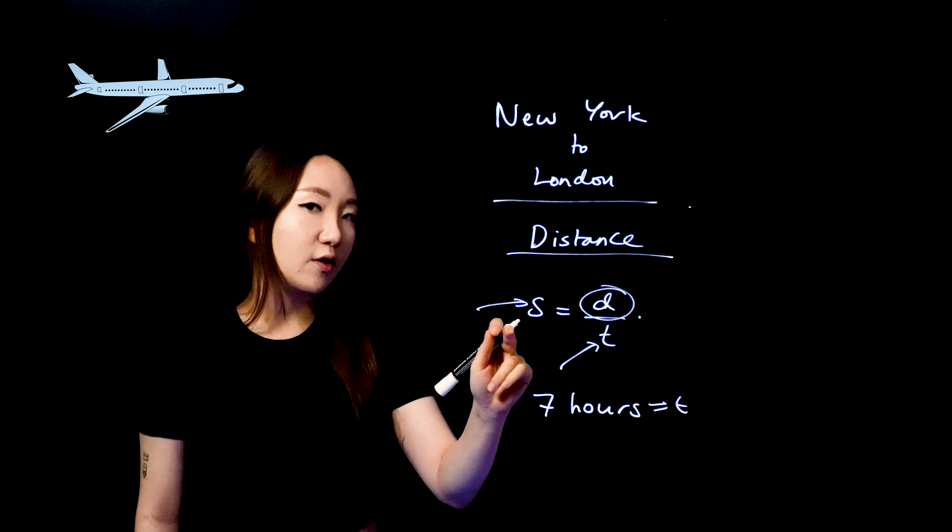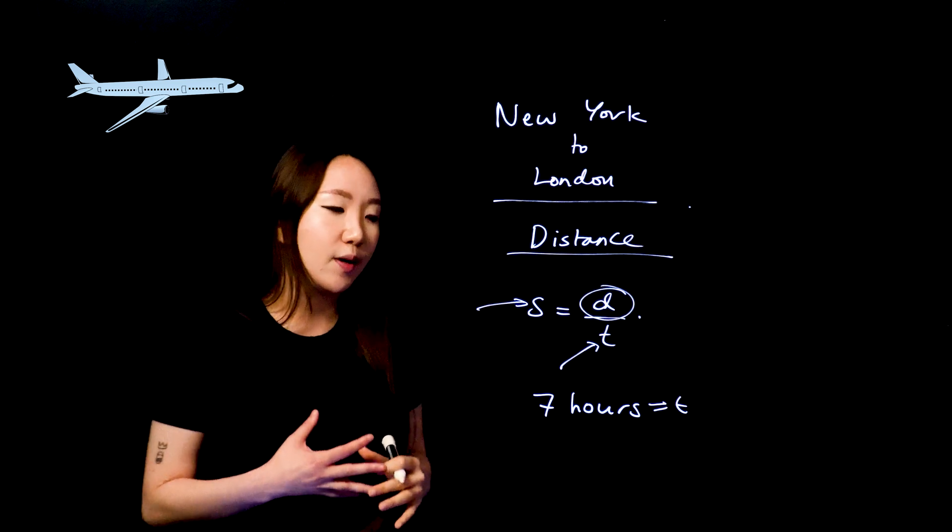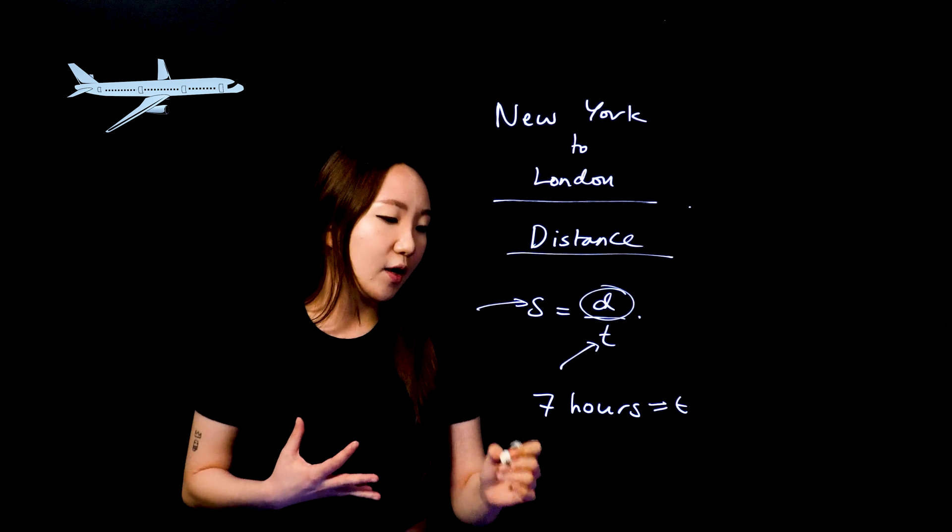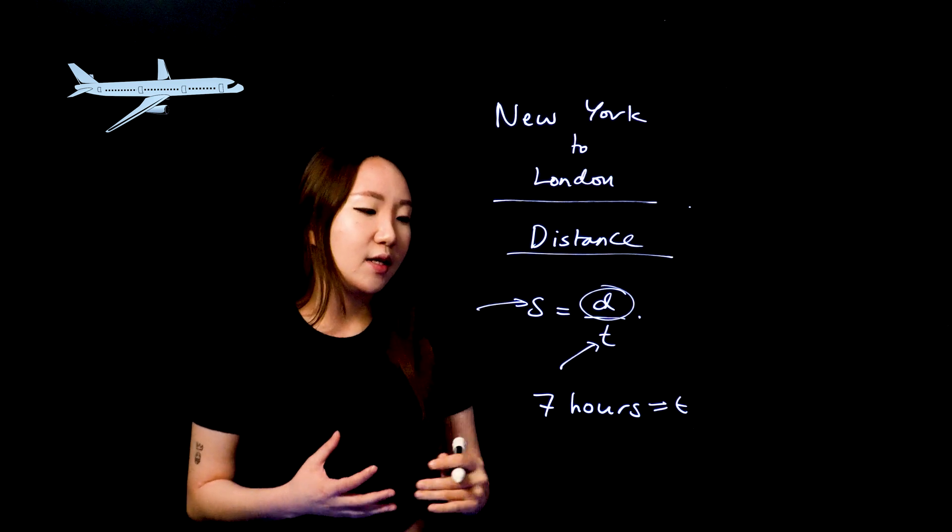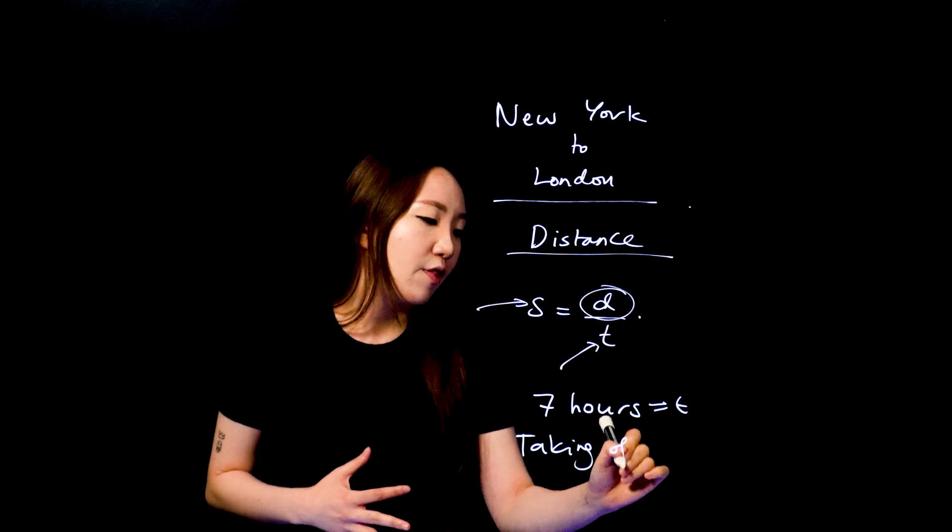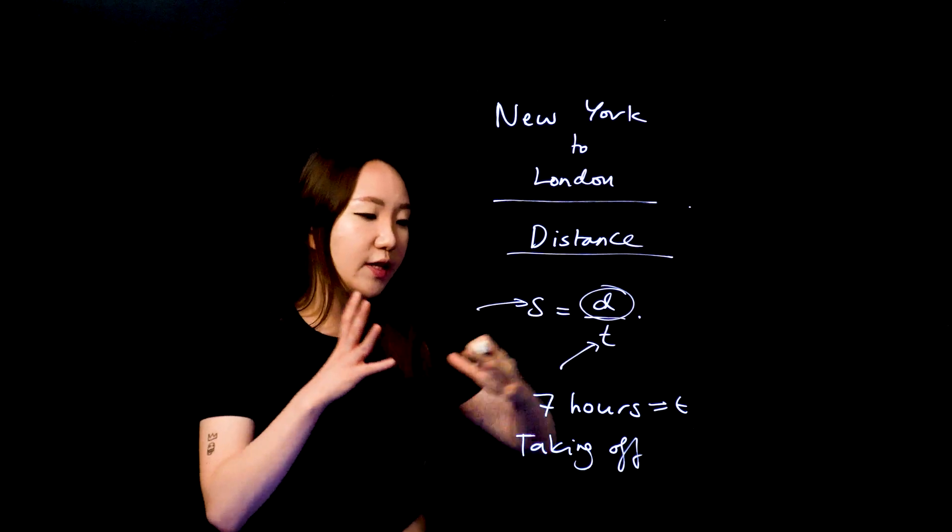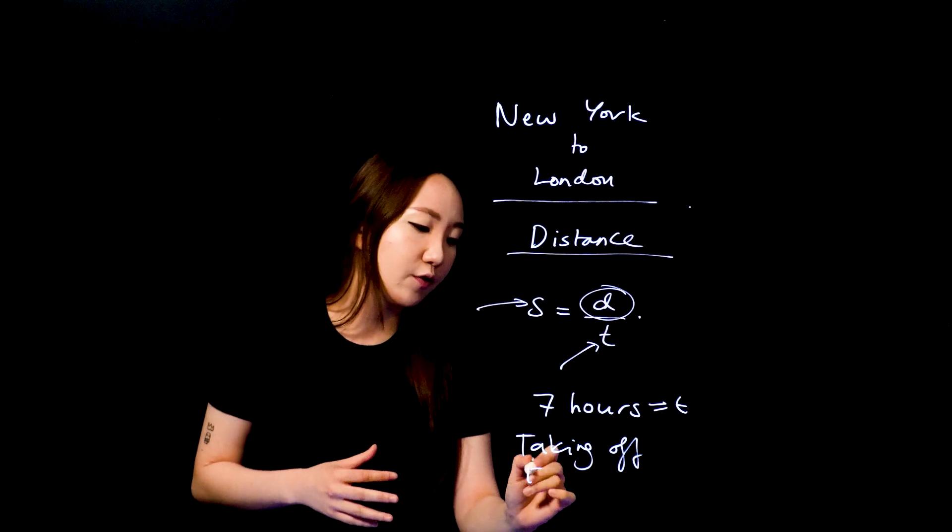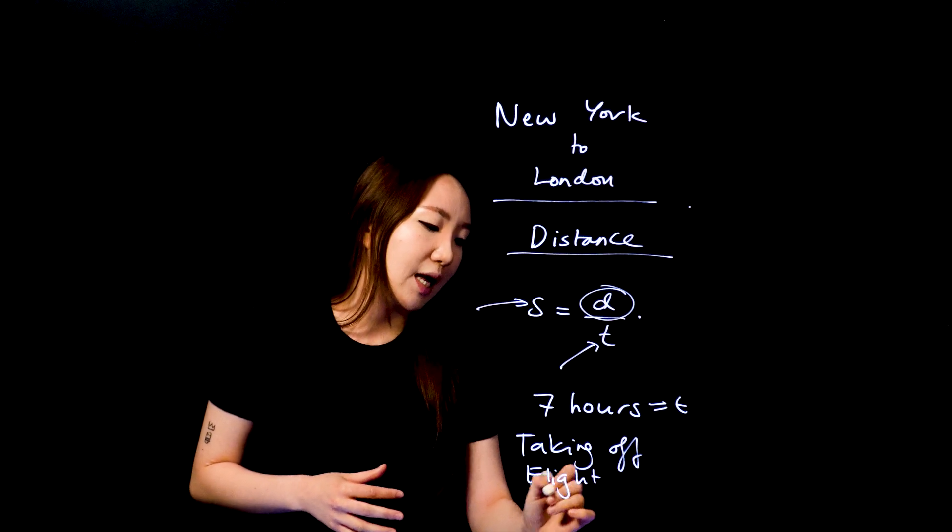Now speed of the plane, this is where I had to think about it a little bit more. So I'm thinking when you are travelling on a plane, there's kind of three parts. There's the part where you're taking off. Then there's the actual flight, kind of like the actual travelling part itself. And then you've got landing.